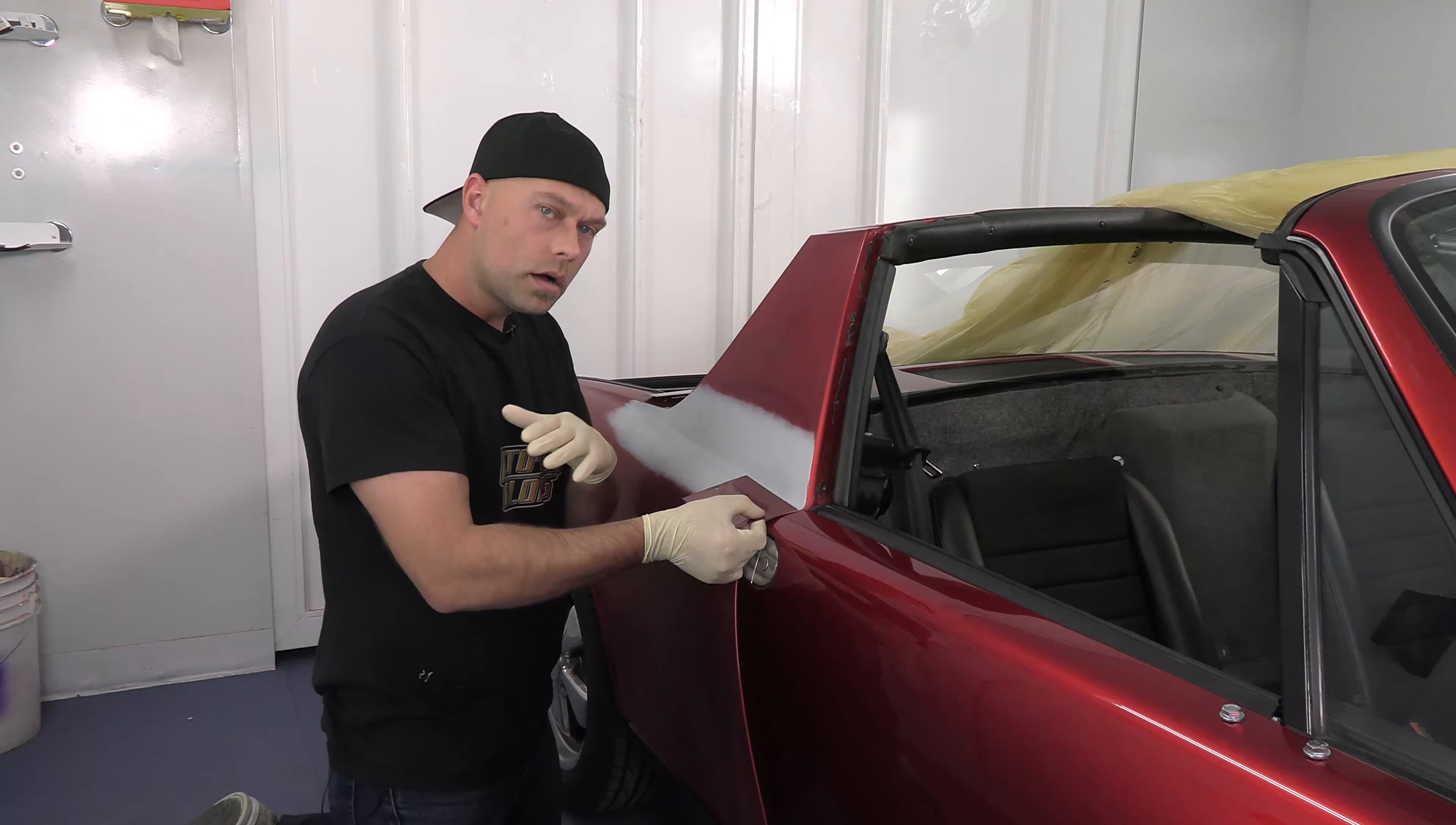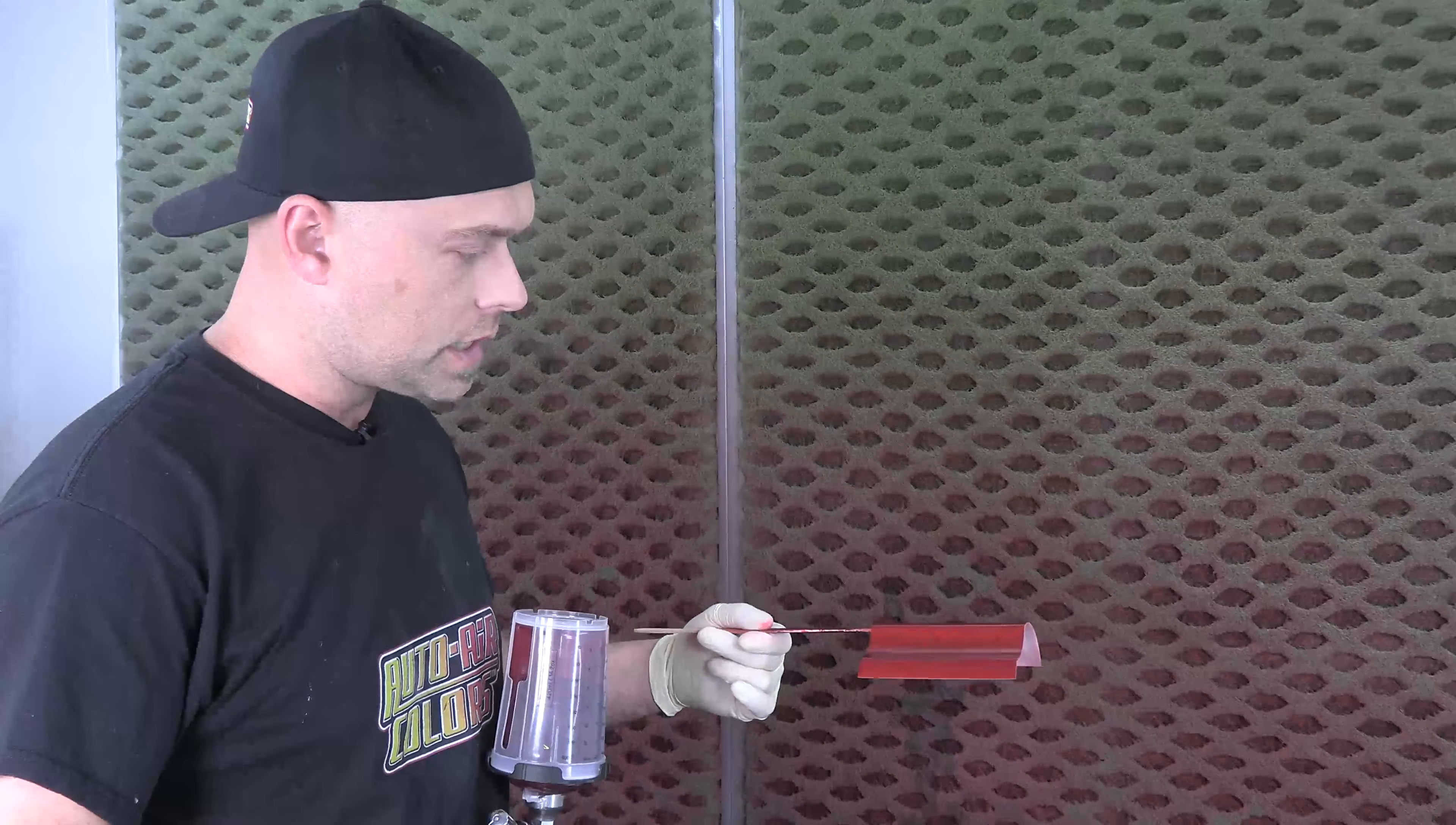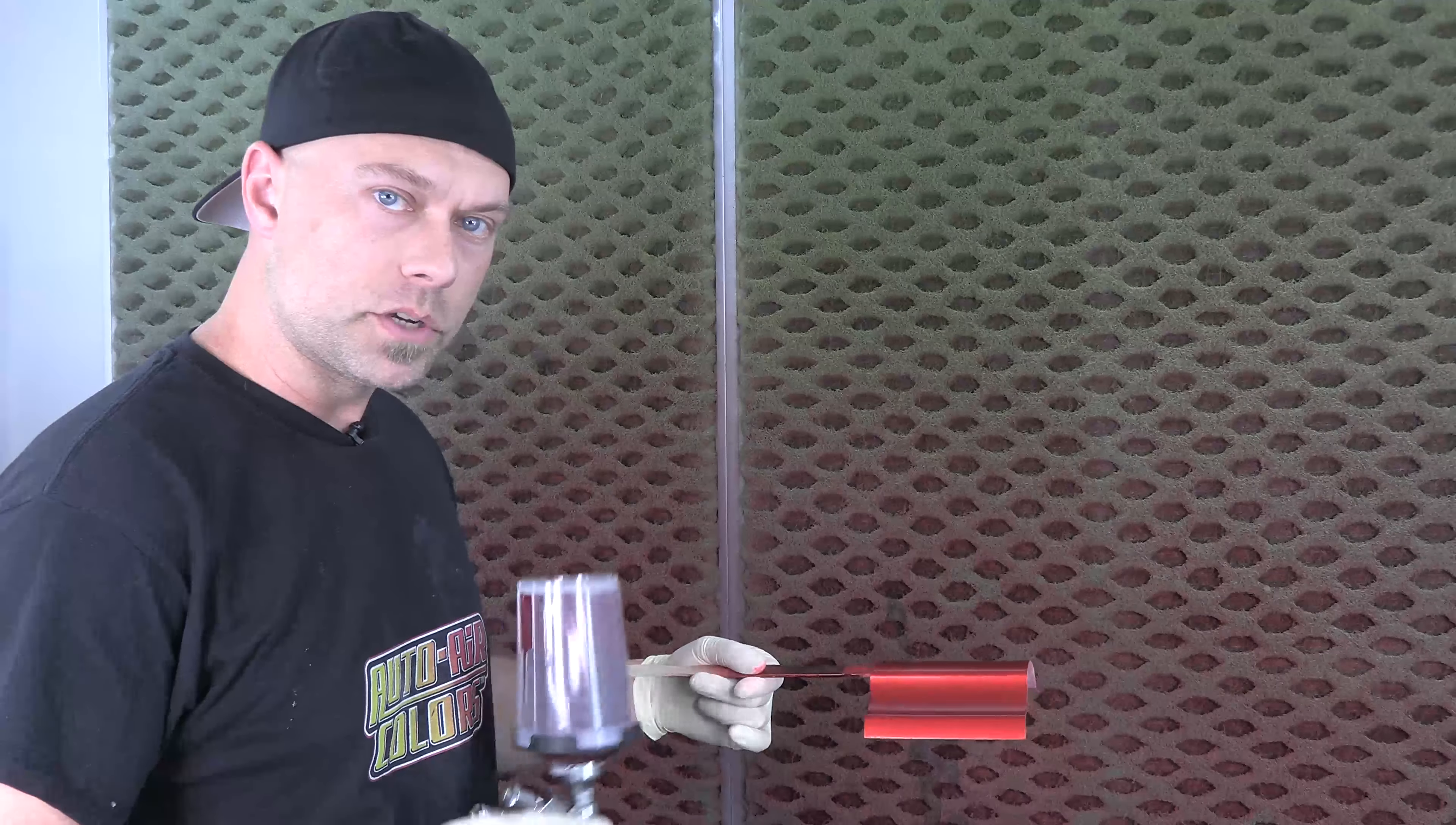Alright, coat number two is totally dry. I'm going to do coat number three and then check that up against the car. That's one of the things we're talking about—doing a test panel, making sure everything is exactly how you want it. I think coat number three is going to be the ticket to get the color where we want it. We'll see you guys next time. Be sure to keep an eye out for the video on actually doing this car when we spray those panels—two quarter panels, a hood, and a trunk.